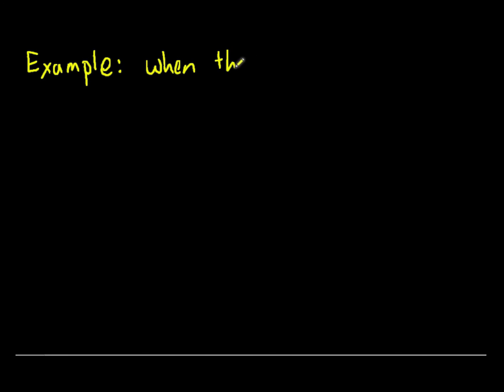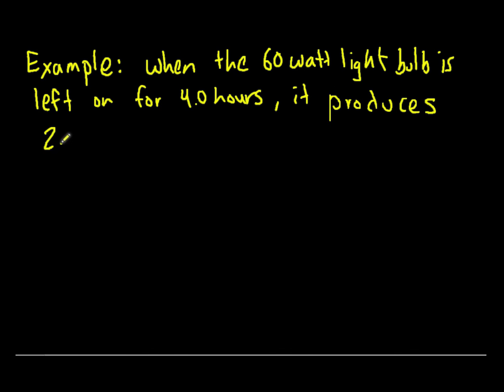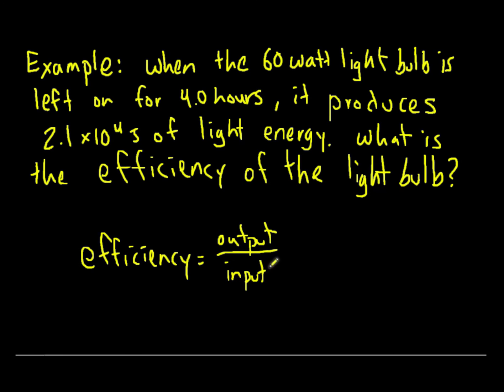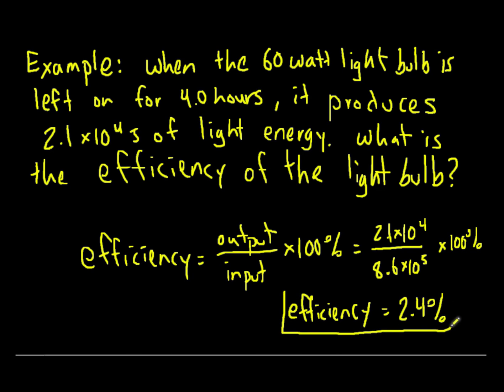For example, when the 60 watt light bulb was left on for 4 hours it produces 2.1 times 10 to the 4 joules of light energy. What is the light bulb's efficiency? Efficiency is output over input times 100%. This is 2.1 times 10 to the 4 the output divided by the input which was 8.6 times 10 to the 5 times 100%. This gives us an efficiency for our light bulb of 2.4%. This number may seem very low but it's actually quite common for an incandescent light bulb. They really are quite inefficient.